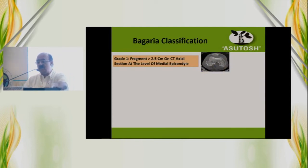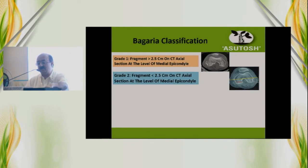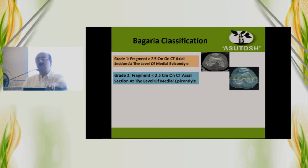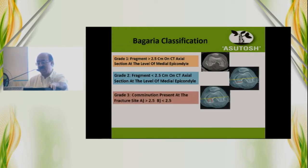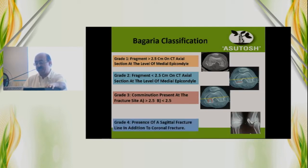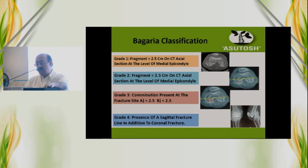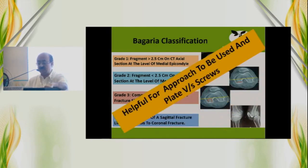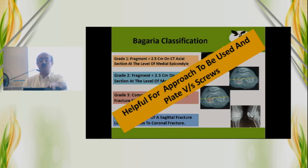Baghariya, who was in Nagpur when he described his classification, defined Grade 1, Grade 2, Grade 3, and Grade 4. It is a CT-guided classification that depends on the size of the fragment from the medial epicondylar axis on the axial CT cut. A combination is Grade 3, and if there is a sagittal fracture in addition to the coronal fracture, it is Grade 4. This classification is not yet popular, but it is helpful in guiding the right approach and whether a plate will be needed in addition to screws.